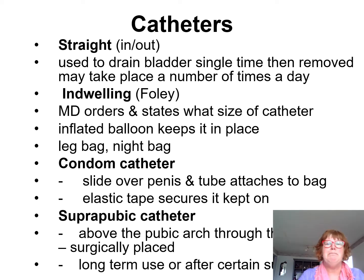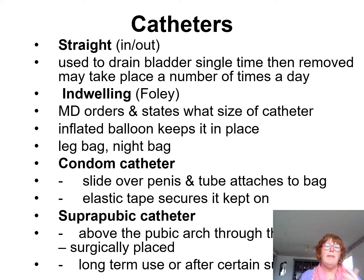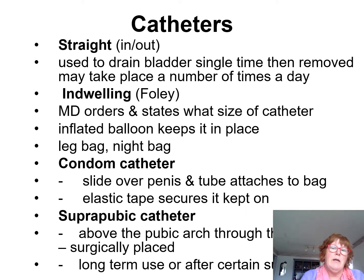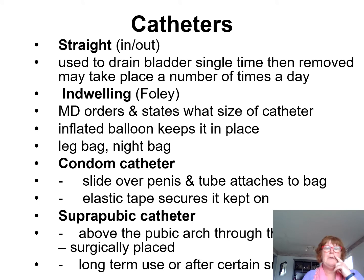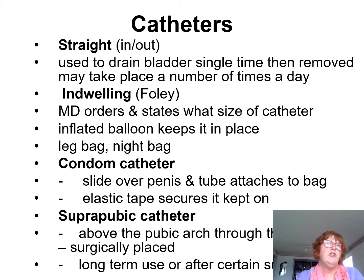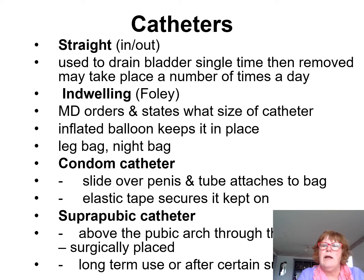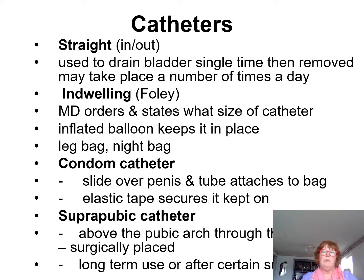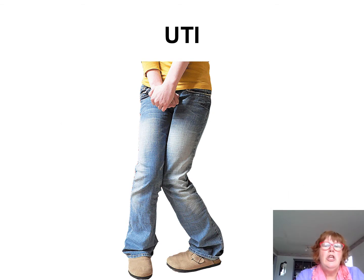Straight catheters are used once; some clients wash and reuse them. Indwelling catheters stay in for about a month, condom catheters are changed every two days, and a suprapubic catheter stays in for about a year or longer. If someone is sexually active and needs a long-term catheter, a suprapubic catheter is often preferred, since an indwelling catheter can make intercourse difficult or prevent erection.